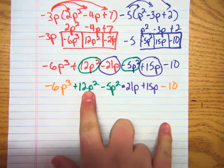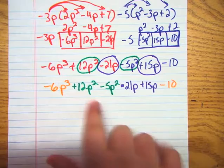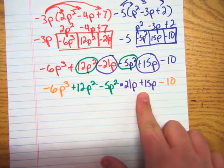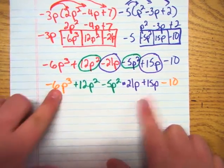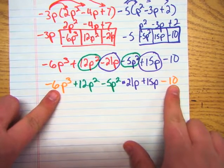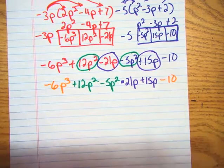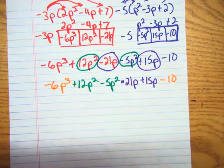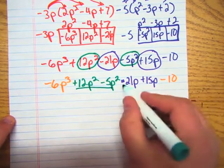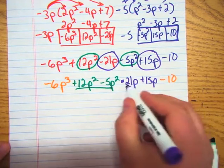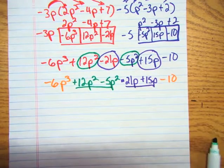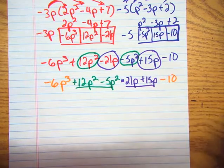These green ones are p squareds. These purple ones are p's. And then these two are just in orange because they don't have any like terms. They're already simplified, right? So now what that means is I'm going to combine these and then combine these. And those are my like terms that I'm going to combine. Does that make sense? All right. So let's do that.